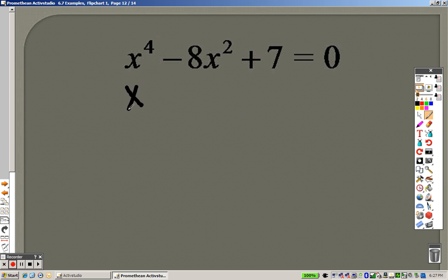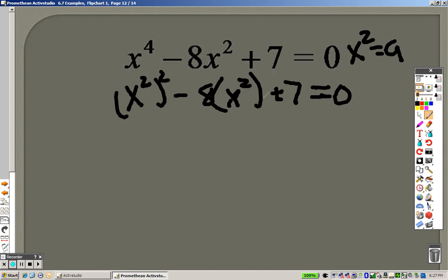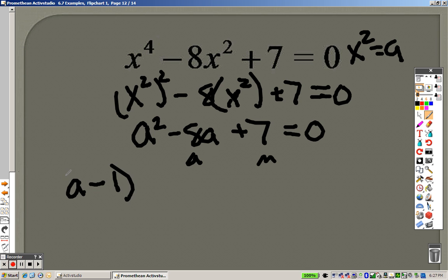Taking a look at this one, I could rewrite this again as x squared squared minus 8x squared plus 7 equals 0. And, remember, I could do x squared equals a. So, really, this is like saying a squared minus 8a plus 7 equals 0. Can you think of two numbers that multiply to give you 7 that add to give you that? Yep.